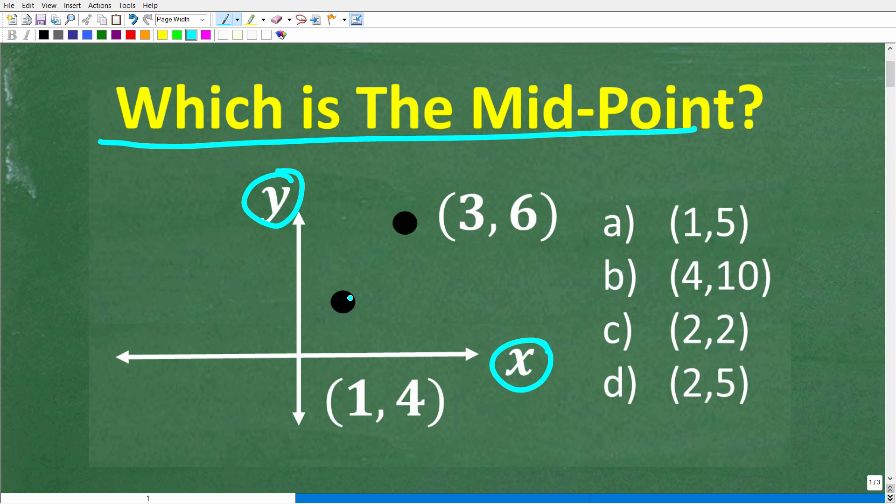So we have 1, 4 right here and 3, 6 right here. And the midpoint is the point that is midway between these two points.